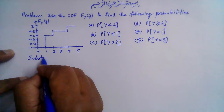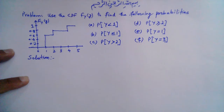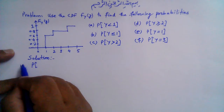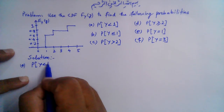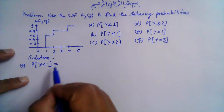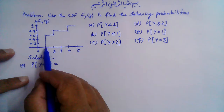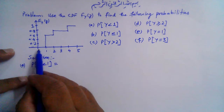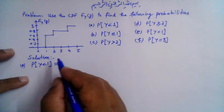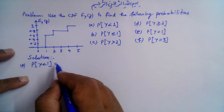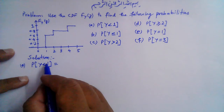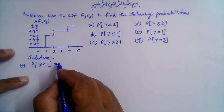Let's begin solving the problem. Part a: probability that Y is less than 1. We see that for values less than 1, this CDF is 0. So obviously the probability that Y is less than 1 is the cumulative probability 0. Therefore, P[Y < 1] = 0.